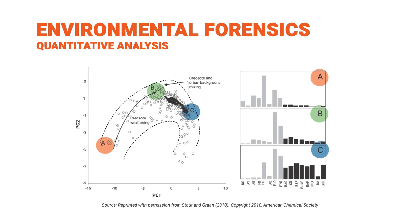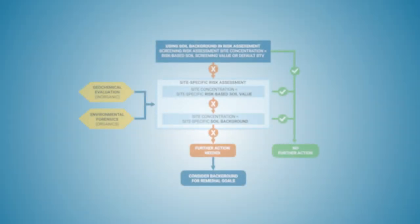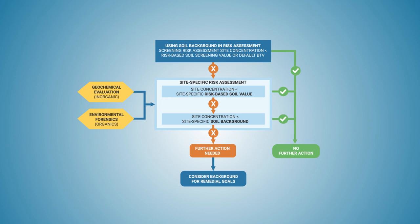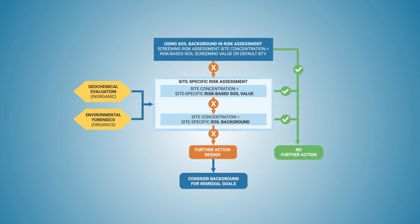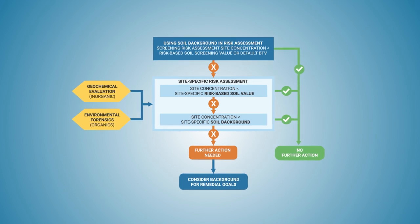Geochemical evaluation and environmental forensics are powerful methods in soil background and risk analysis. They require specific chemical analyses and should be considered during the initial stages of project planning in consultation with qualified experts. For more information on geochemical evaluation and environmental forensics, see Sections 5, 6, 7, and 14 of the ITRC Soil Background and Risk Assessment document at itrcweb.org.